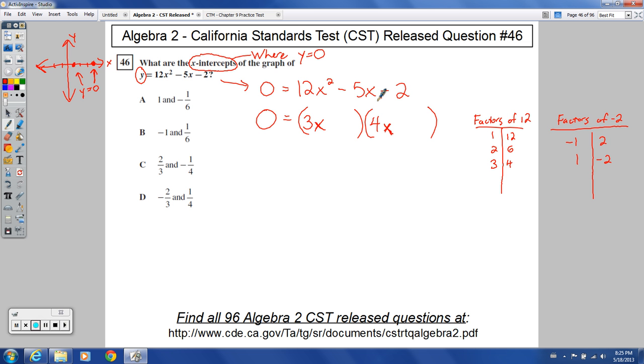And so I know that one of them has got to be positive, one's got to be negative to get a negative product. And if I put a 1 right here, let's try that, and a 2 right here. And if I were to foil this back out, I know the first terms with these being the factors that would have to work out to be 12x squared.